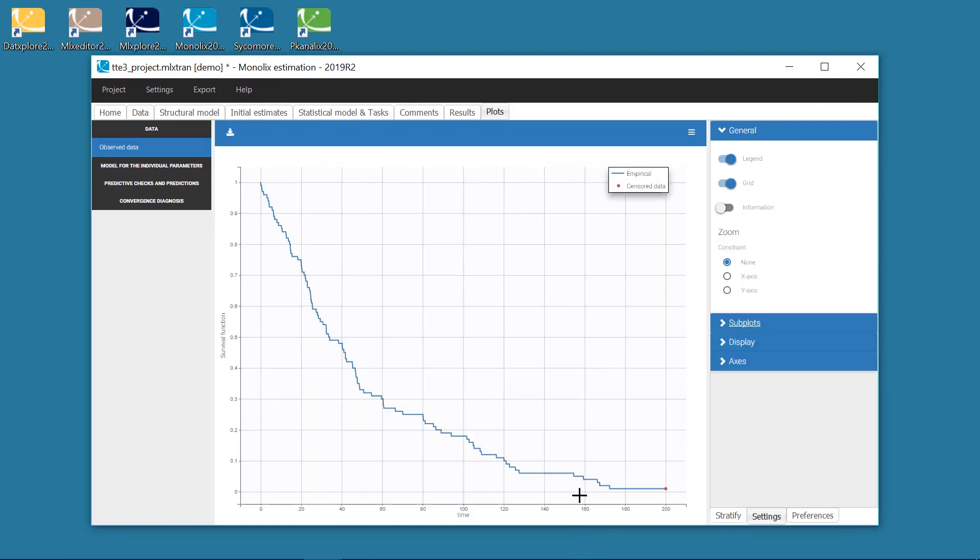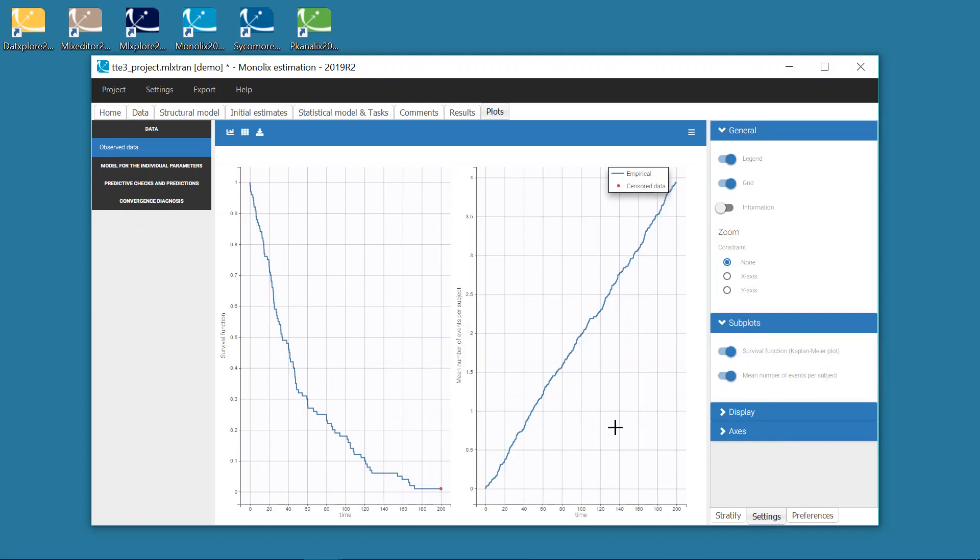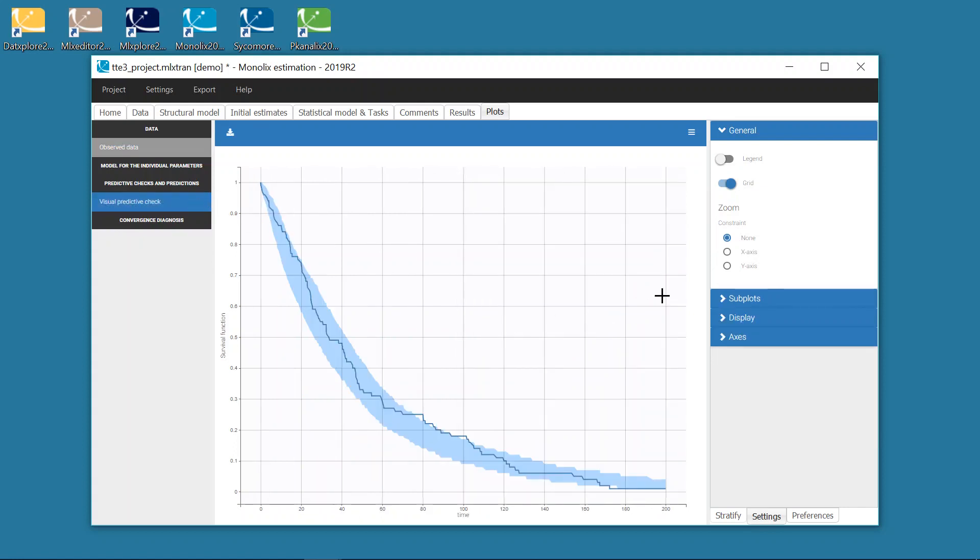Finally, I will show a quick example where the data is about repeated events, like adverse events for example. In that case, it is useful to represent the data not only with the Kaplan-Meier plot, based on the first event for each individual, but also with the mean number of events per subject. After fitting the model, prediction intervals for these two curves can also be displayed as a VPC.